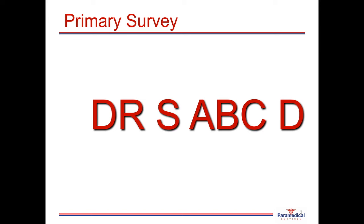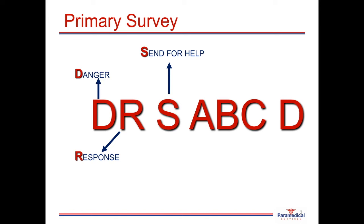Starting with our primary survey, we use our DRS-ABCD approach. When approaching any person who is ill or injured, it's important that we look for any danger. Once we know the scene is safe, we try to elicit a response — this tells us if somebody is conscious, semi-conscious, or unconscious. The next thing is to send for help, which may include calling colleagues, a parent, or an ambulance using 000 on a landline and 112 on mobiles. We then check the person's airway to make sure it is open and clear.